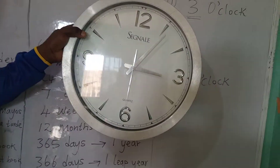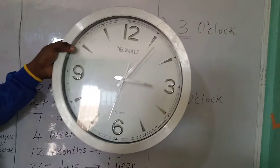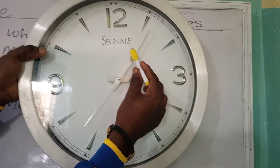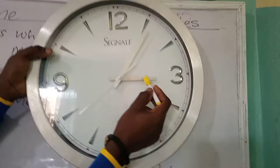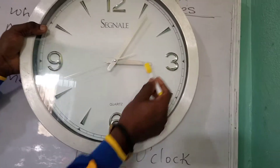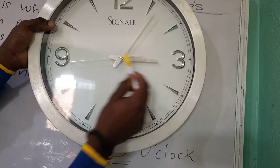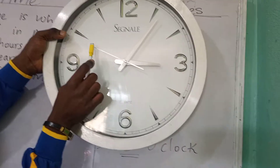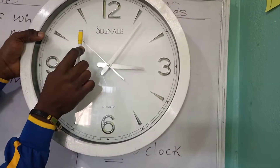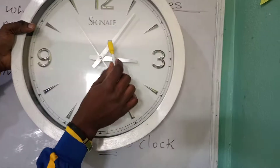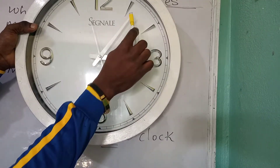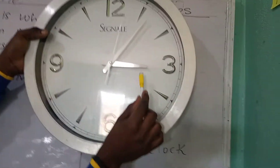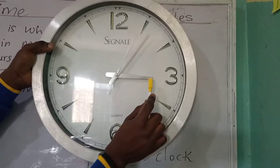Now we are going to look at our example using the clock. When you look at it very well, you can see we have 3 hands here. The one that is moving is the second hand. This long one is the minute hand. The short hand is the hour hand.